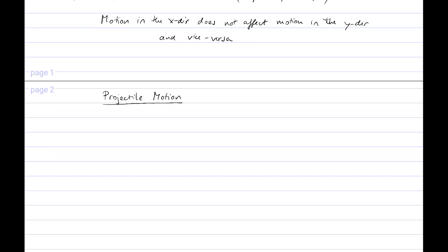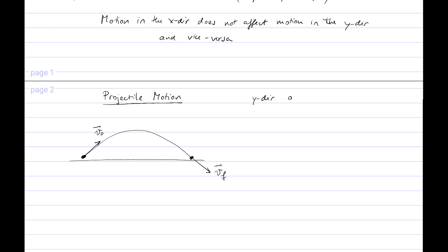Let's say we have ground level, and an object somehow acquires an initial velocity. On Earth, that object will follow a parabolic path and then strike the ground with a final velocity. In all of our problems, we will disregard air resistance and assume we are on Earth.